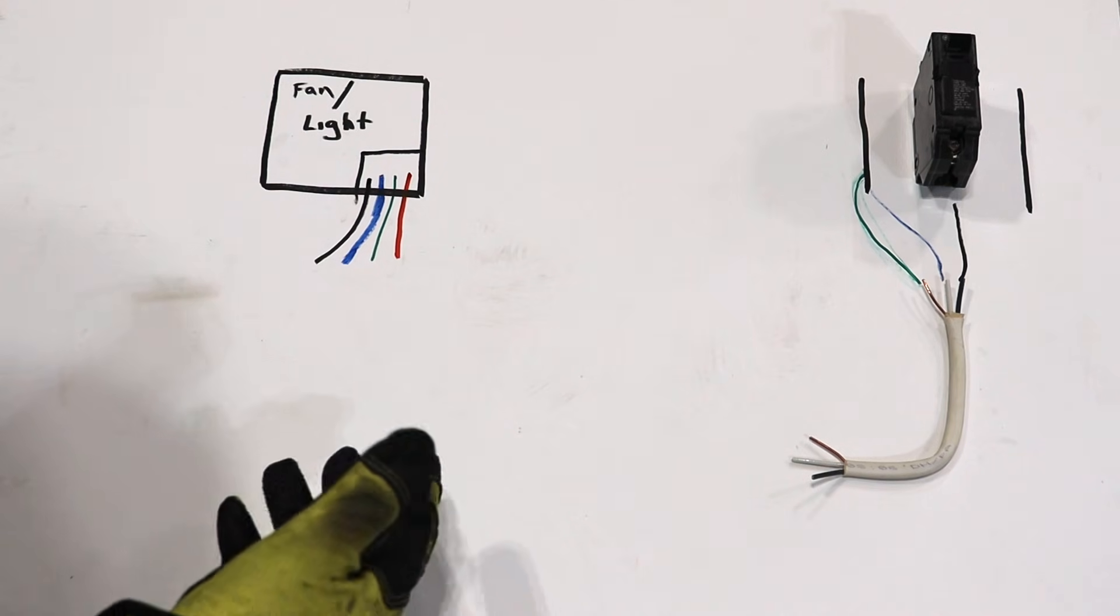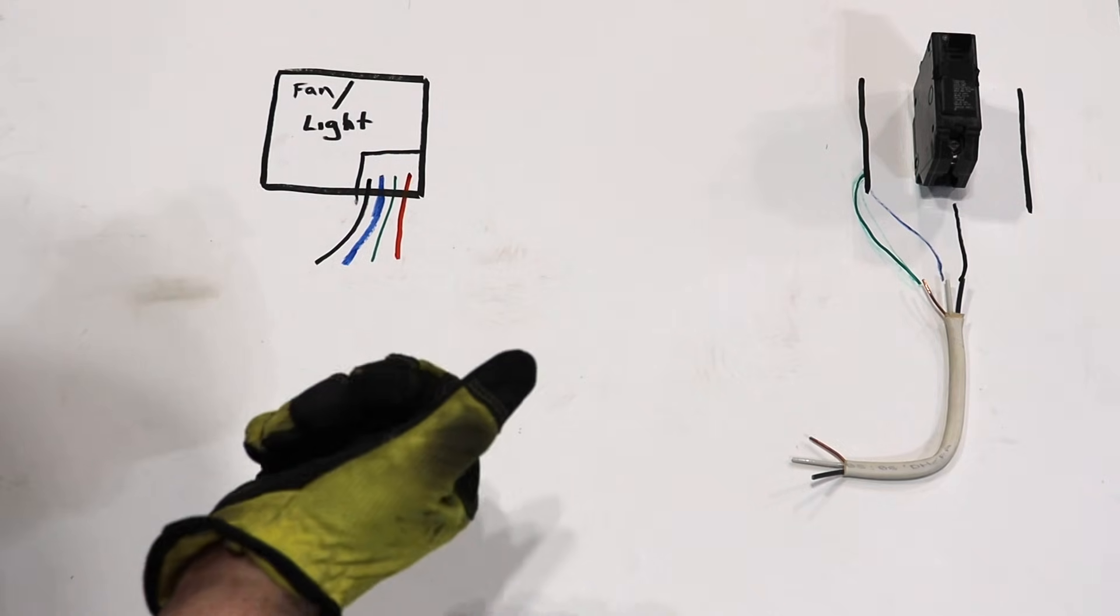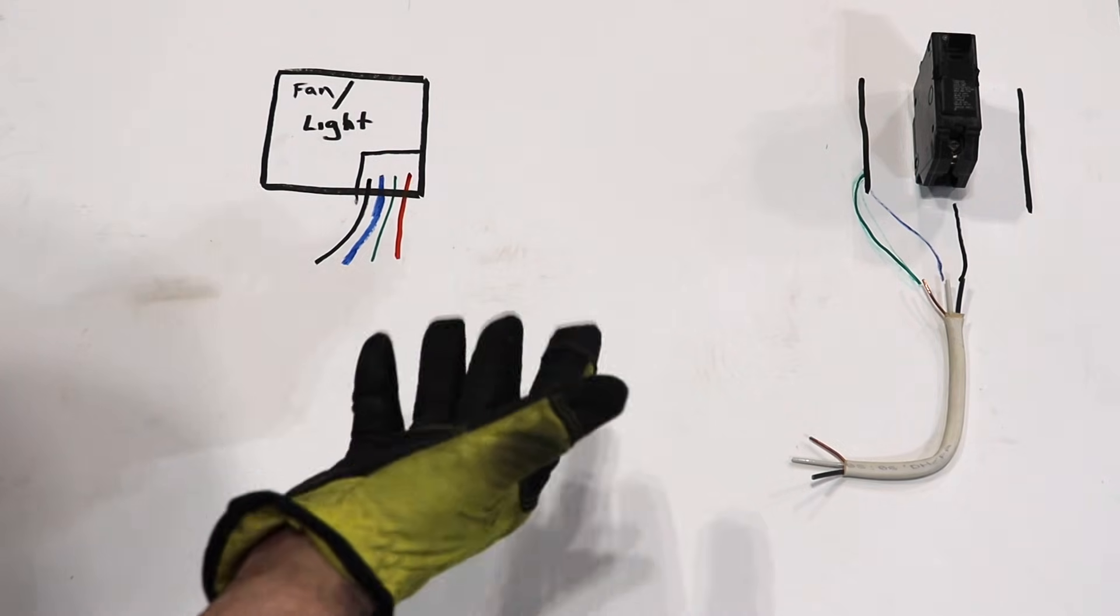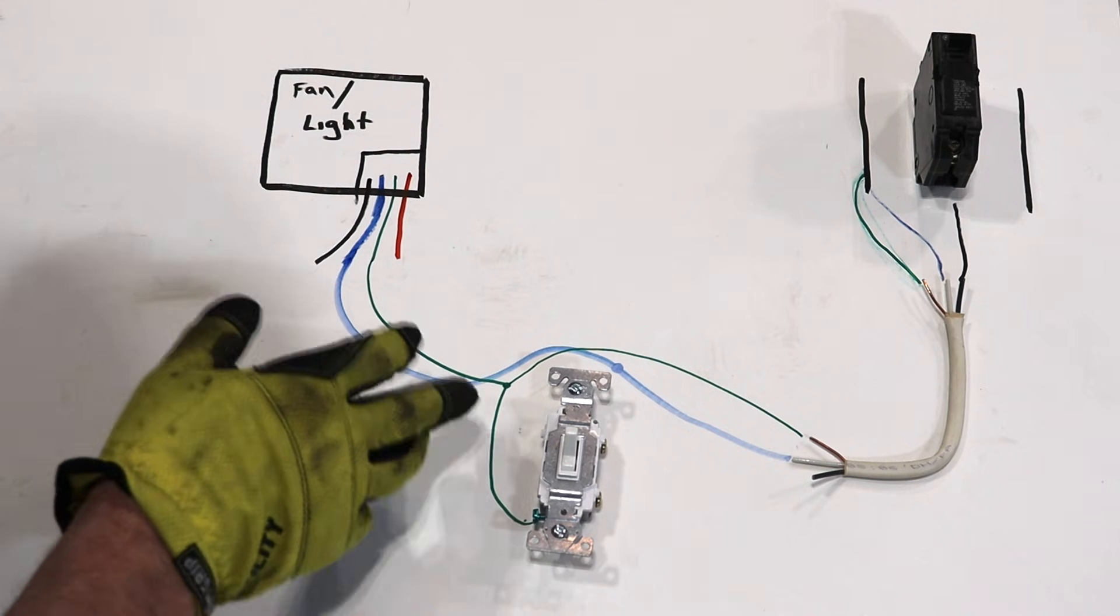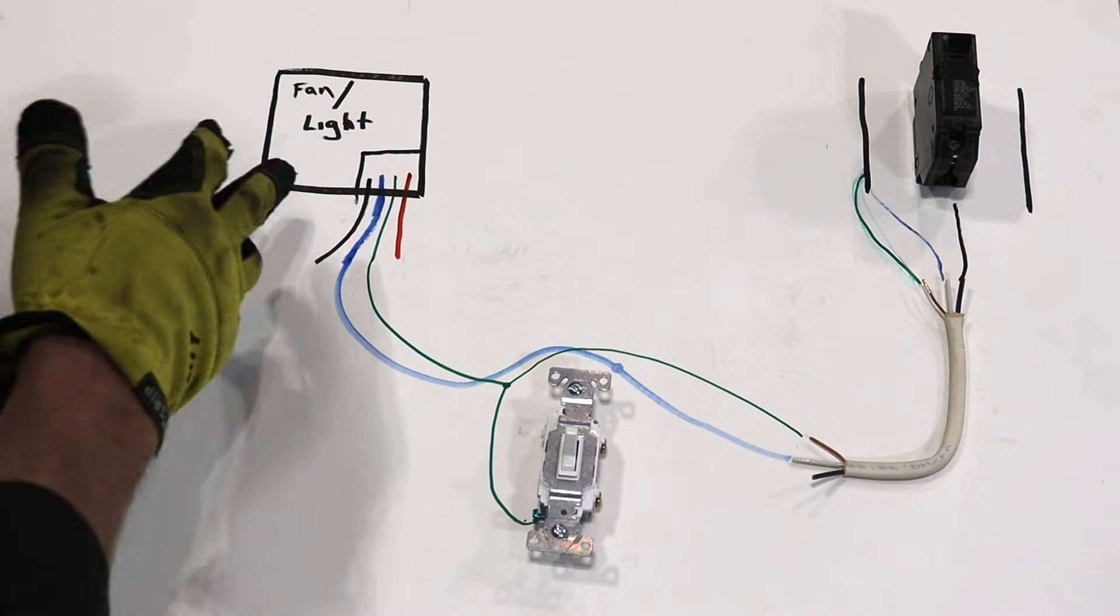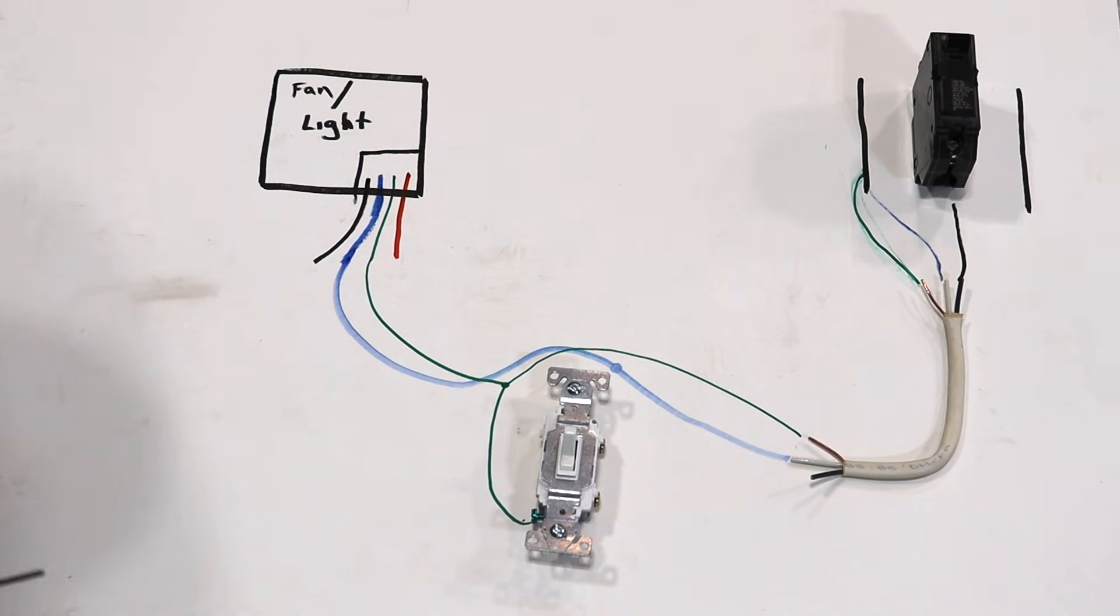If you live in an older home sometimes they have both the black and the red tied together you flip the light switch on and both the fan and light always come on. So if you only have one switch and you're replacing most likely you'll be replacing your fan light combo because if it's a newer house they probably have them separated.